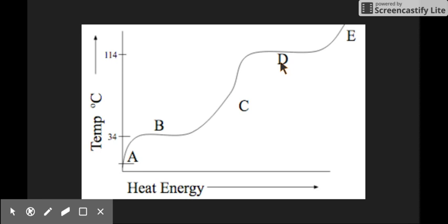Where could the substance be in both the liquid and the gas phase at the same time? Right here at D, you could have liquid chocolate boiling into gas. So you would have liquid and gas at the same temperature and at the same time. Where could the substance be in both the solid and the liquid phase? Here at B.